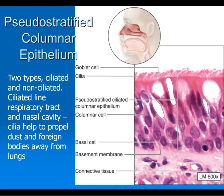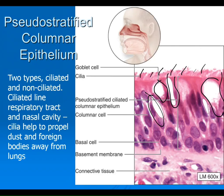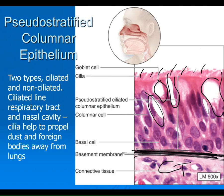Pseudostratified is back — this is something we do need to know. It's found lining your nasal passages and trachea, the respiratory tract. At the surface you can see individual cilia, and there are also goblet cells making mucus. Here would be your basement membrane, and below that, connective tissue. Epithelia above, a jumbled appearance — that's your pseudostratified epithelium.